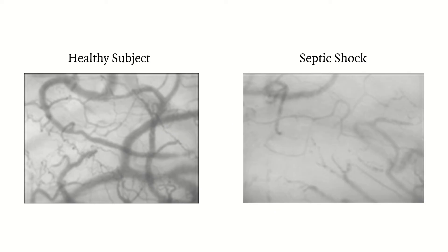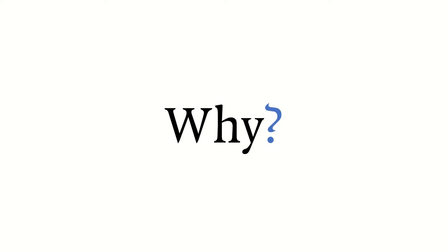The problem with the oxygen delivery equation is that it doesn't account for the state of the capillaries in the body. When someone has sepsis or septic shock, you see a disruption of the capillaries and microcirculation. In a normal subject, there's a very dense network of capillaries and oxygen diffusion is smooth. In septic shock, you have disruption in the capillaries and oxygen diffusion is impaired. So even though you're optimizing the heart, hemoglobin, and lungs, you would still see some degree of ischemia because of capillary disruption.